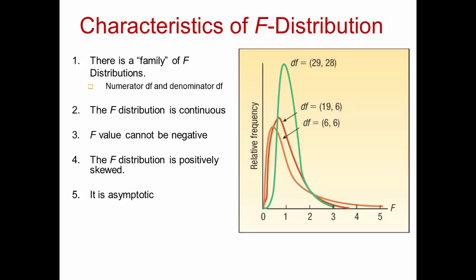The F-distribution is a continuous distribution, meaning it can assume an infinite number of values between zero and positive infinity. The F-value cannot be negative — the smallest value is zero. The F-distribution is positively skewed because the larger variance is placed in the numerator and the smaller variance is in the denominator, so it has a long tail to the right. As the number of degrees of freedom increases in both numerator and denominator, the distribution approaches a normal distribution.